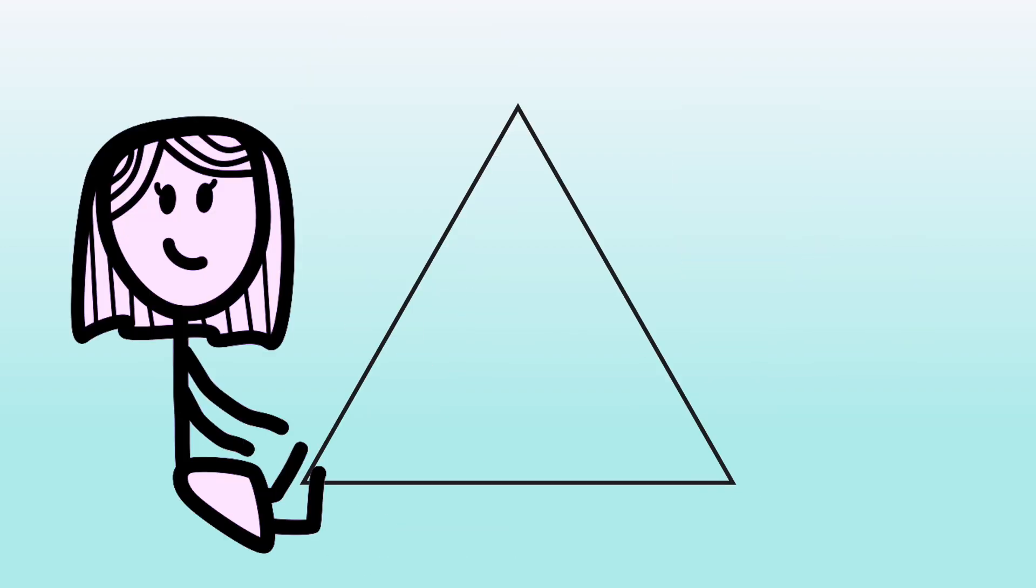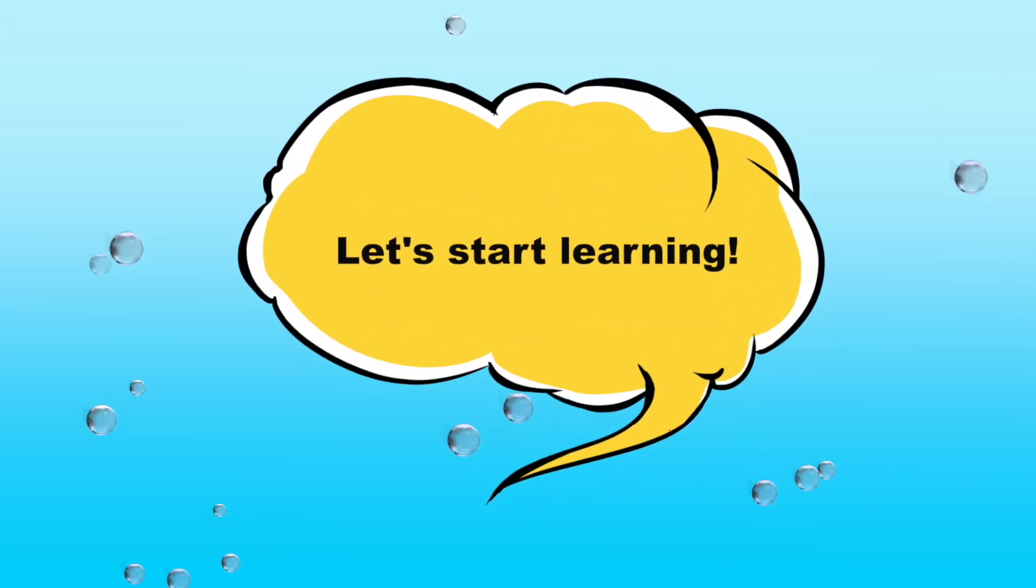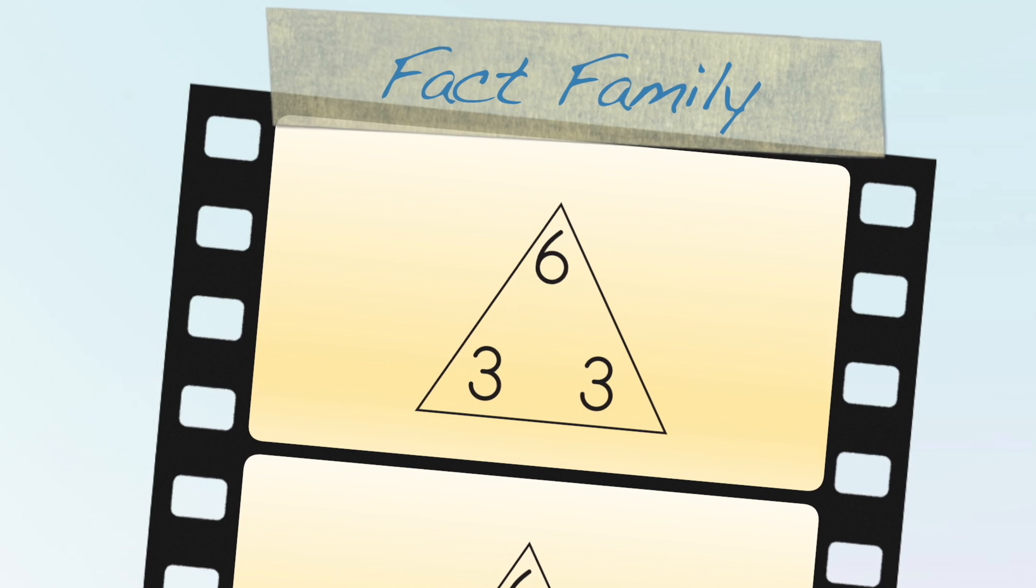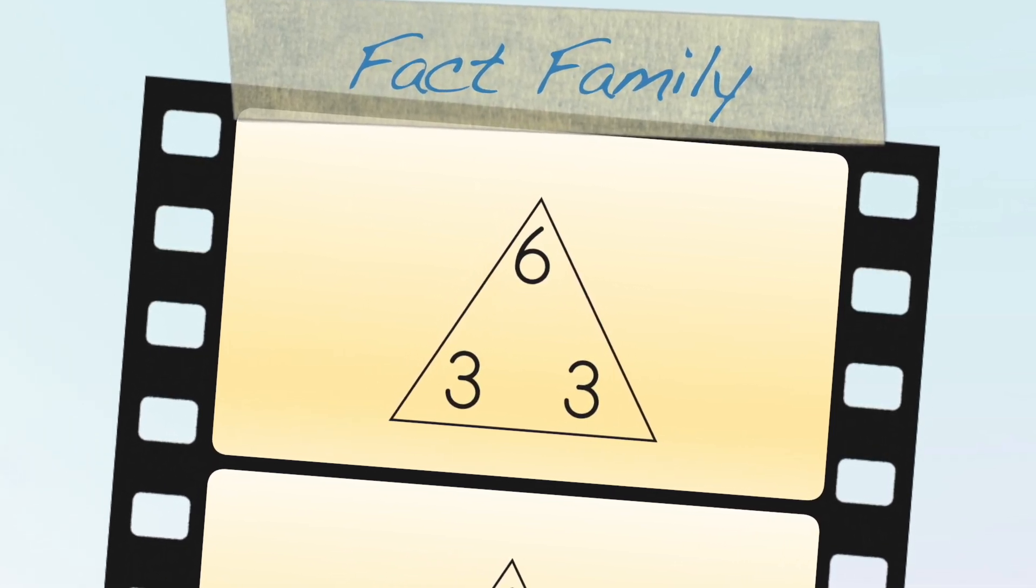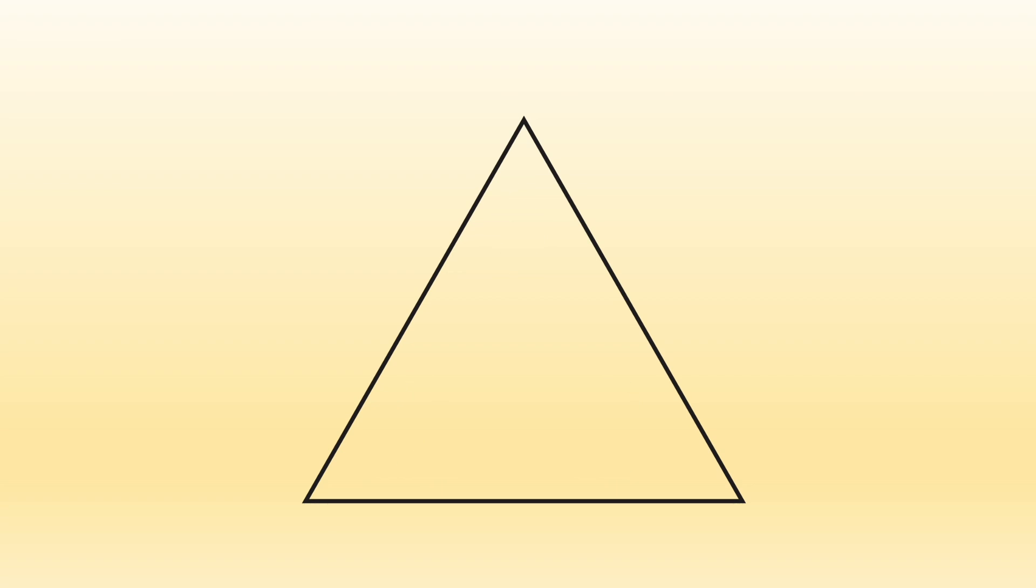Carla knows that a fact family triangle is a big help for listing facts. A fact family is made up of three numbers that go together to make addition and subtraction facts. You put the largest number at the top of the triangle, and the other numbers go to the bottom.